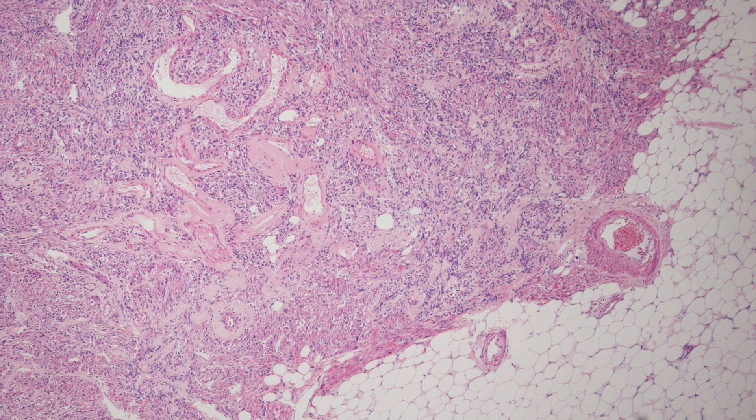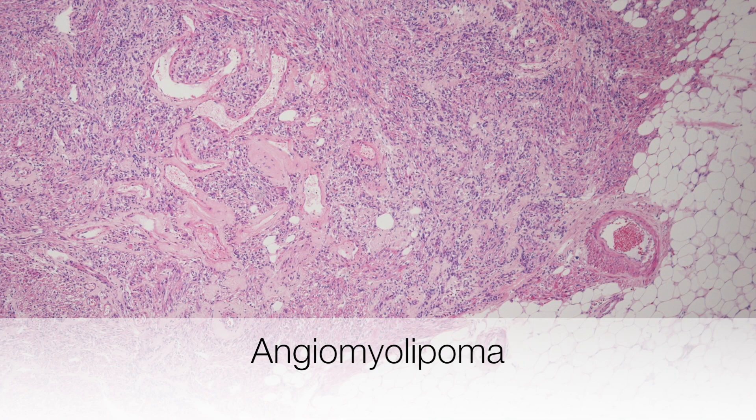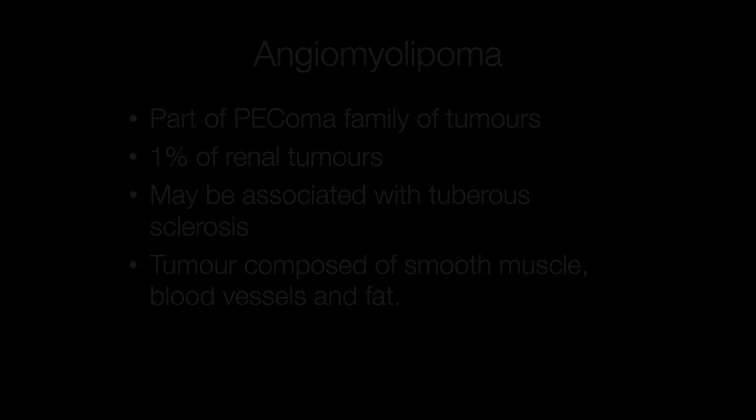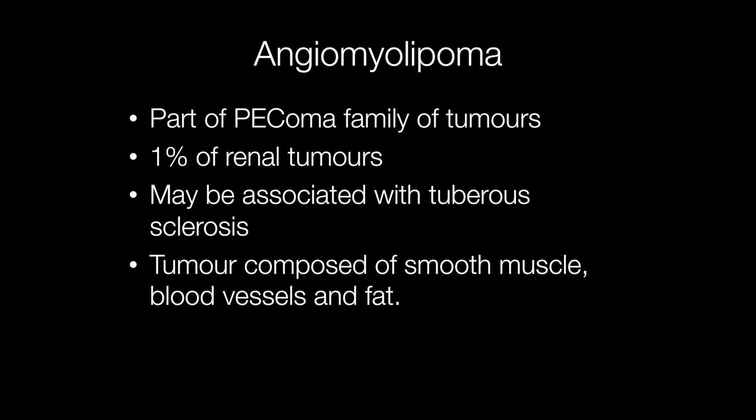The fourth case was a kidney mass from a 35-year-old female who had tuberous sclerosis. This tumour is an angiomyolipoma. Angiomyolipomas are now known to be part of the PEComa family of tumours. They account for approximately 1% of renal tumours and may, as in this case, be associated with tuberous sclerosis. As the name suggests, the tumour is composed of smooth muscle, blood vessels, and fat.